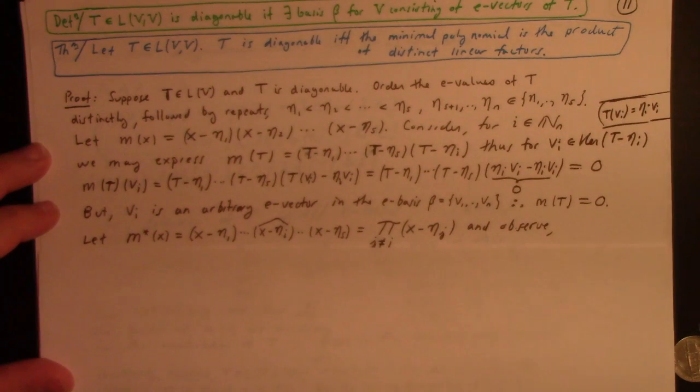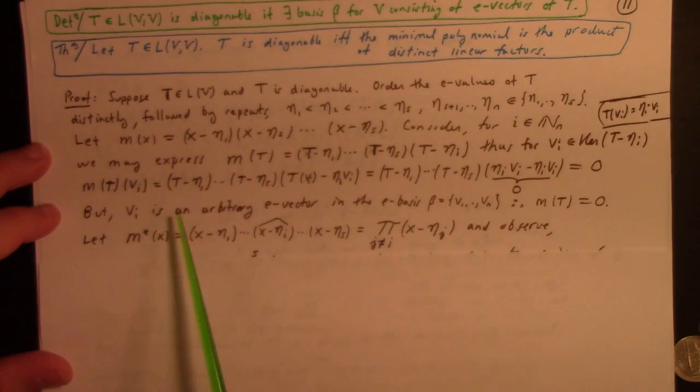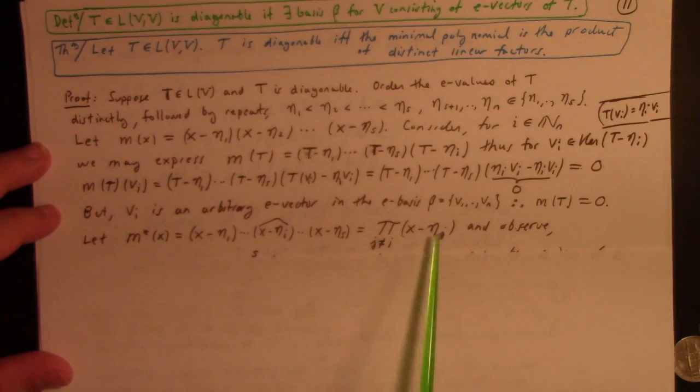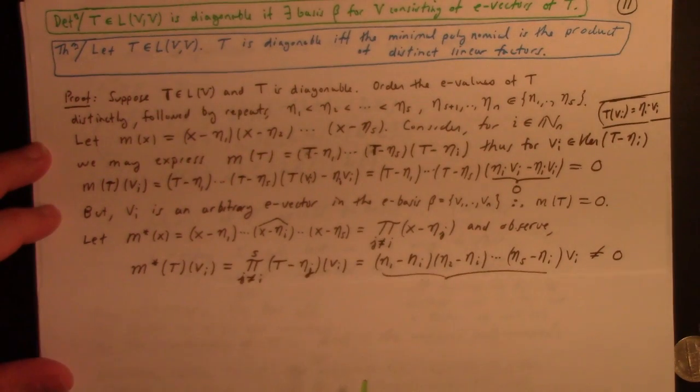At a minimum, the minimum polynomial's in there somewhere. But you can't remove anything though. The thing is, m of x is as good as it gets. If you removed even one factor, like the i-th one, you'd have the product of x minus a j for j not equal to i, and for this m star, this deleted, reduced polynomial, if you will, if you feed that vi, well, you get the product of a 1 minus a i, a 2 minus a i, da da da, a S minus a i times vi, but these are all non-zero.